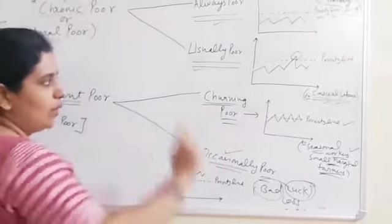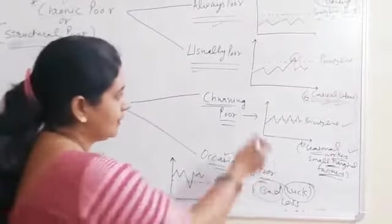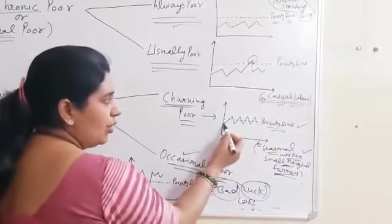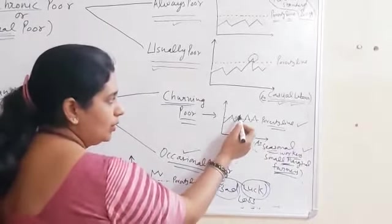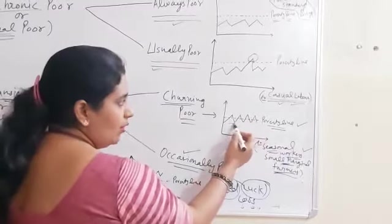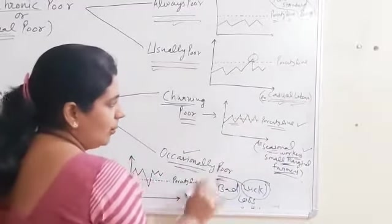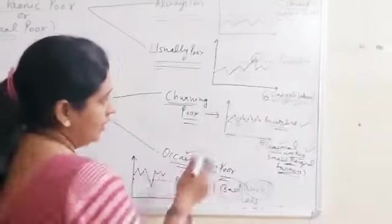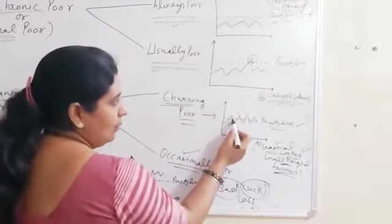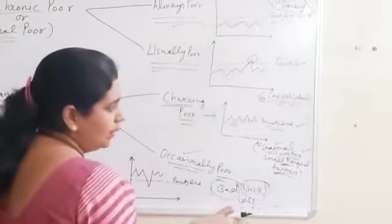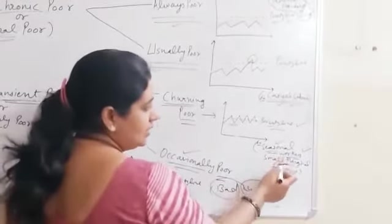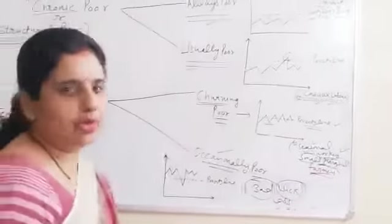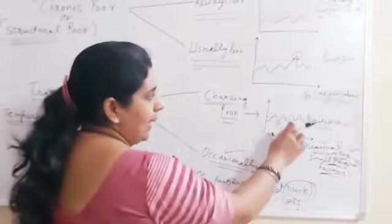First we will talk about churning poor. See the diagram — this is the poverty line. They continuously fall above or below the poverty line because they are seasonal workers who seasonally get work. When they get work they fall above the poverty line, otherwise they are below it. Seasonal workers and small and marginal farmers are examples of churning poor. They continuously move up and down.